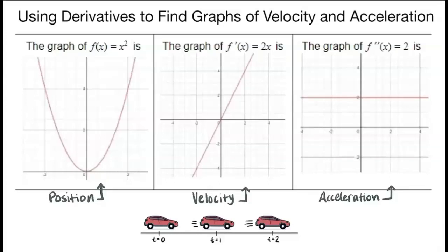Let's take a look at the graphs of the functions. The original function or its position is f of x equals x squared. The first derivative of this function or its velocity is f prime of x equals 2x. The second derivative of the function or its acceleration is f double prime of x equals 2. Notice that the second derivative is a constant.